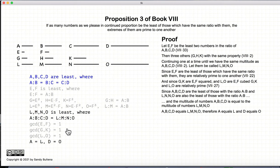So let's put all of this together. We have that L, M, N, and O are the least numbers where the ratios A, B, C, and D is equal to L, M, N, and O. So L, M, N, O is the least by construction, according to Proposition 2 of this book.